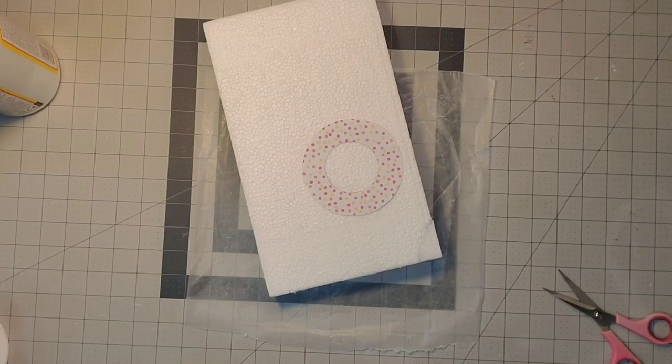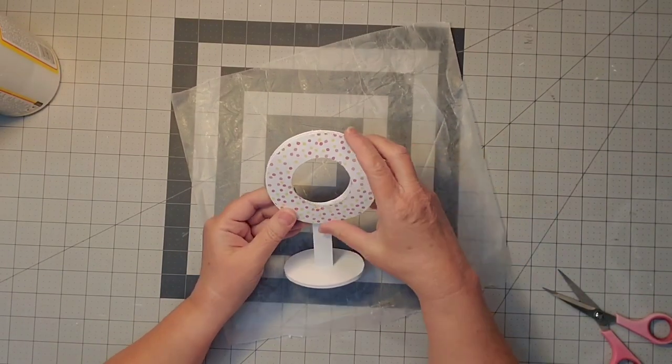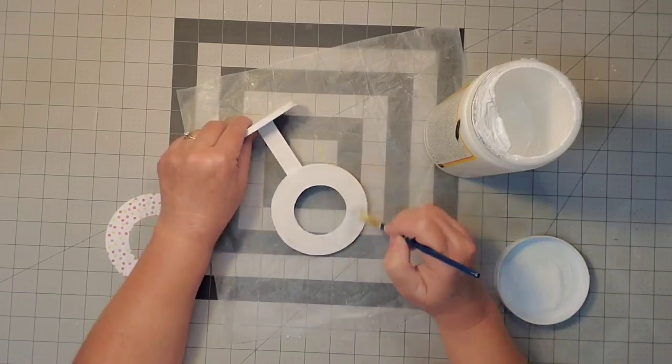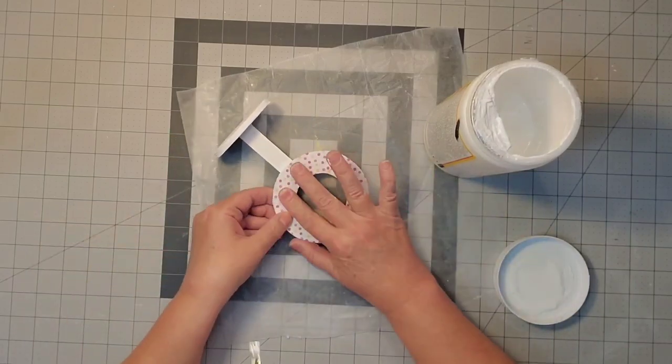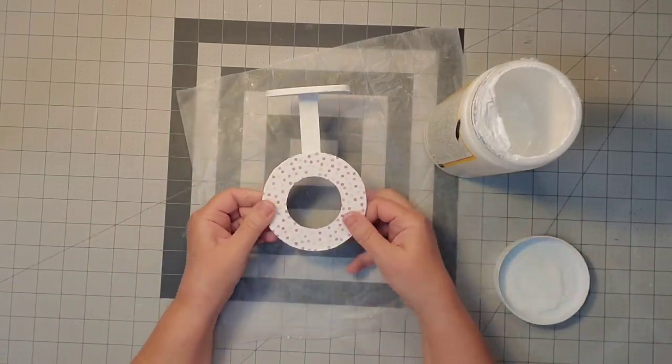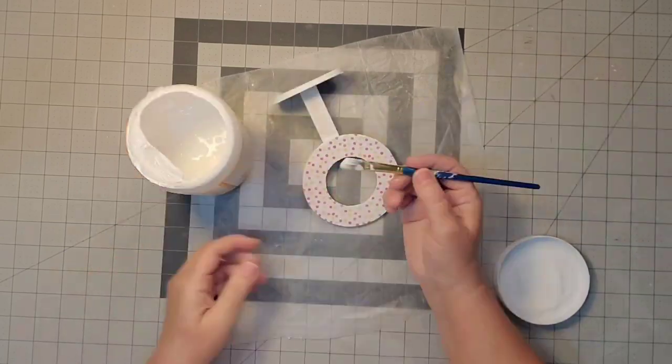It looks kind of like a donut. Then I'll apply Mod Podge to the front. Once that was dry, I came back and put a coat of Mod Podge on the top as well.